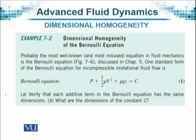First, we try to work out this example. The Bernoulli's equation is P plus half rho V squared plus rho GZ is equal to a constant. It can be written in different forms — sometimes we divide throughout by rho, sometimes not — but they are all equivalent forms of Bernoulli's equation. Given the present form, we have to see that each term has the same dimension.